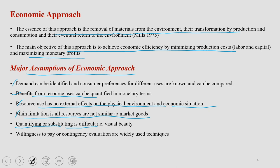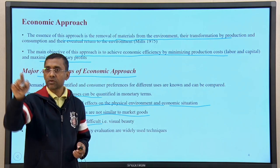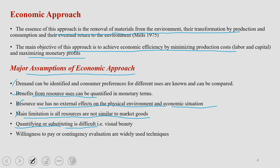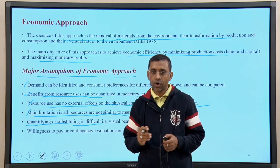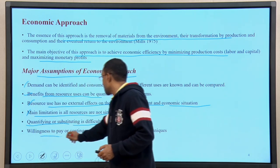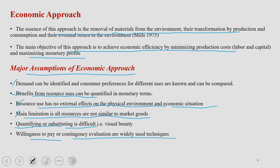For example, suppose you need coal as a resource for a certain activity in society. To substitute coal with another resource for continuing that particular activity may not be feasible, because that activity can only happen when you take coal from nature. So, substitution of one natural resource by another can sometimes be difficult. Finally, willingness to pay and contingency evaluation are widely used techniques in economic approach. If you are taking natural resources from nature for your benefit, you are expected to be willing to pay for that. These are the major assumptions considered under economic approaches.